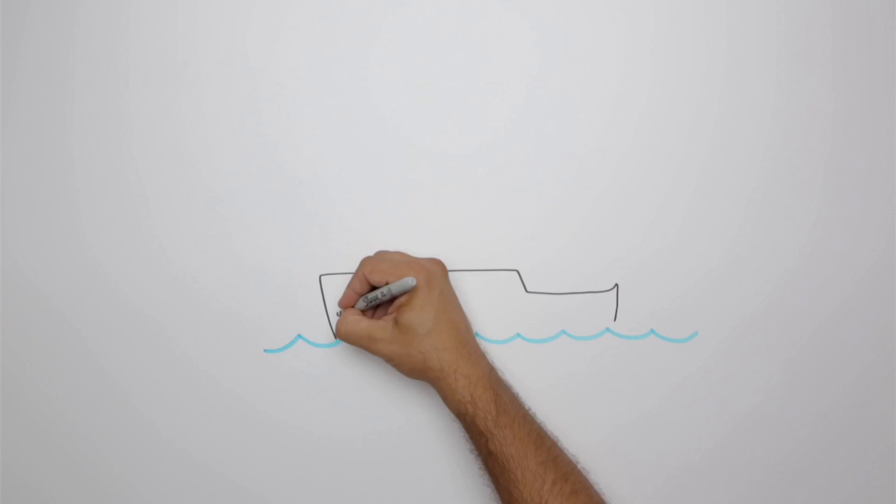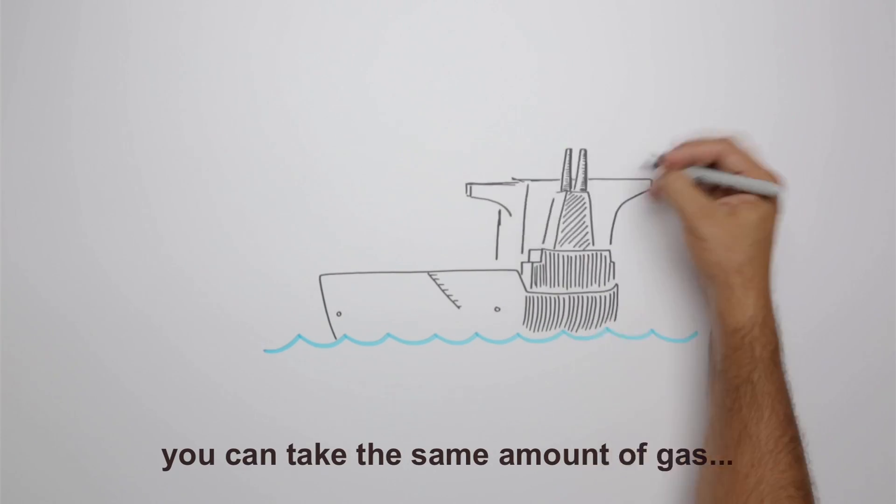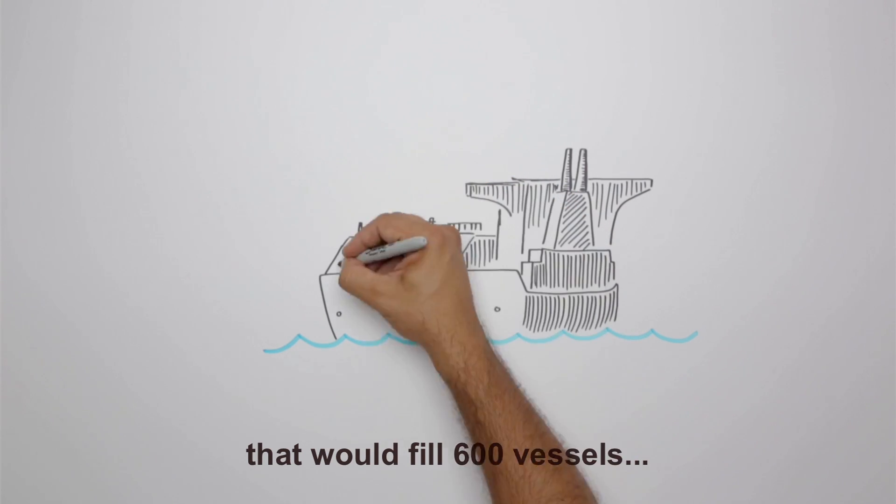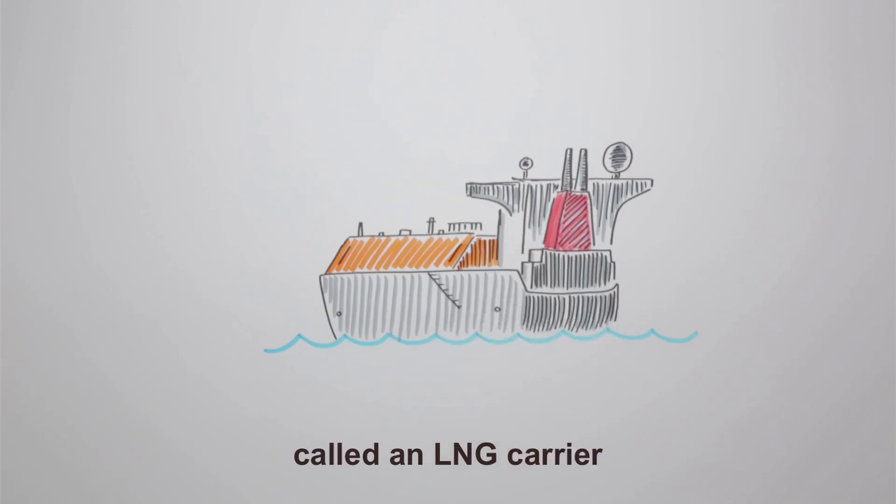By cooling natural gas to negative 162 degrees Celsius, you can take the same amount of gas that would fill 600 vessels and send it overseas in just one ship, called an LNG carrier.